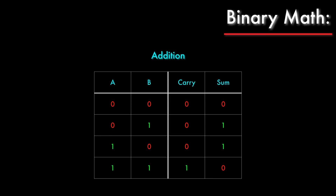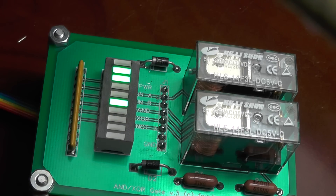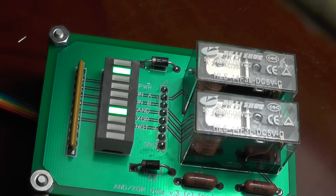Now if you remember the last video, you might have noticed that the carry output is exactly the same as the AND gate, and the sum output is exactly the same as the XOR gate. That means that the prototype AND XOR gate that I made should be able to function as an adder, and in fact it is — it's a 1-bit half adder.